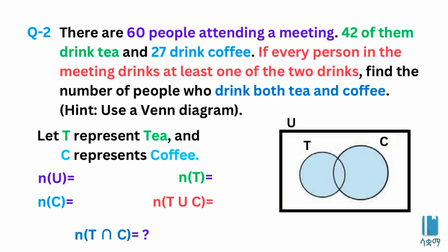Number two: there are 60 people attending a meeting. 42 of them drink tea, and 27 drink coffee. If every person in the meeting drinks at least one of the two drinks, find the number of people who drink both tea and coffee.